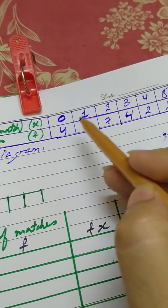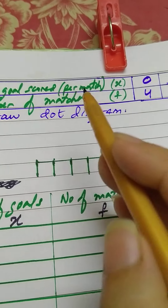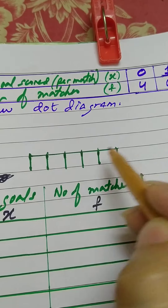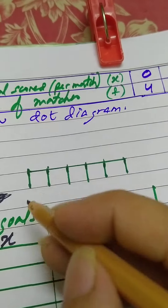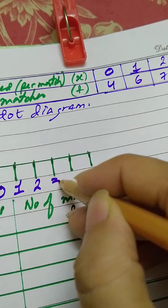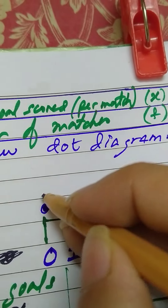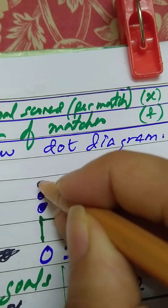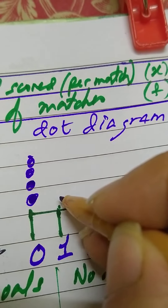Now he says draw the dot diagram. A dot diagram is a statistical diagram where the number line represents the survey — here the survey is number of goals scored per match: zero, one, two, three, four, five goals. Above the number line, the dots represent the number of matches, i.e., the frequency. Zero goals in four matches means four dots above zero.